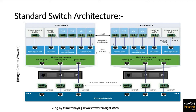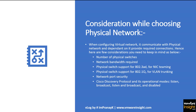When choosing your physical network, there are some considerations to keep in mind, since virtual networking communicates with and depends on the physical network. Key considerations include: the number of physical switches you have, the network bandwidth required, whether the physical switch supports 802.3ad, VLAN trunking, network port security, Cisco Discovery Protocol and its operation modes (listen, broadcast, listen and broadcast, and disable). You need to gather this information from your networking team and deploy accordingly.